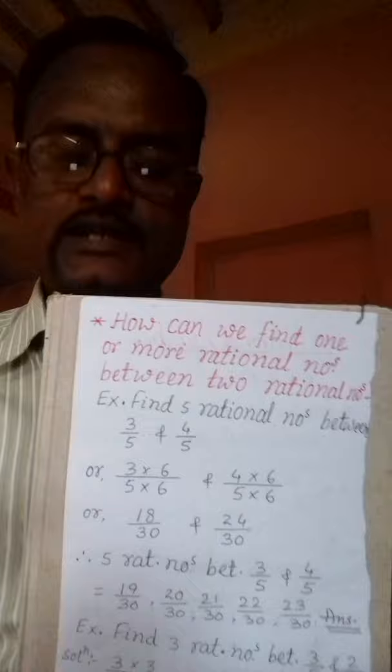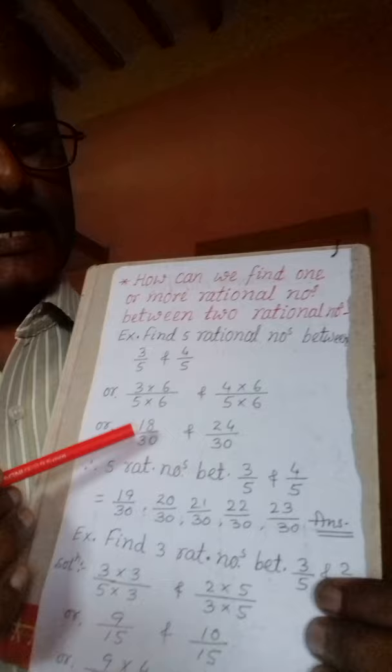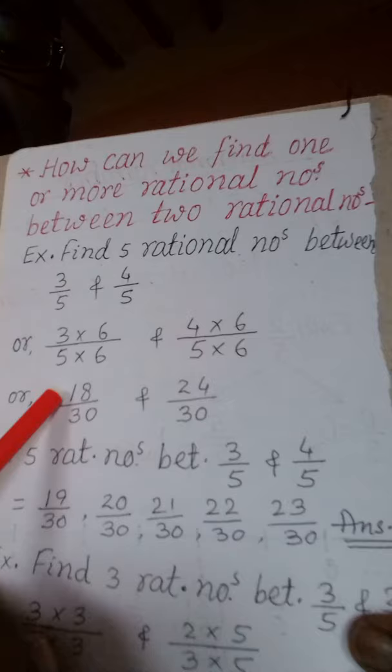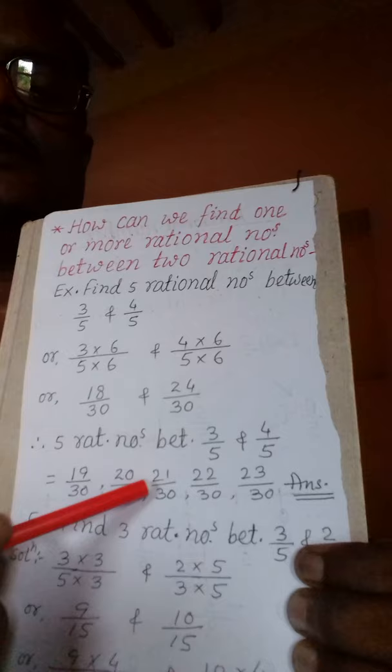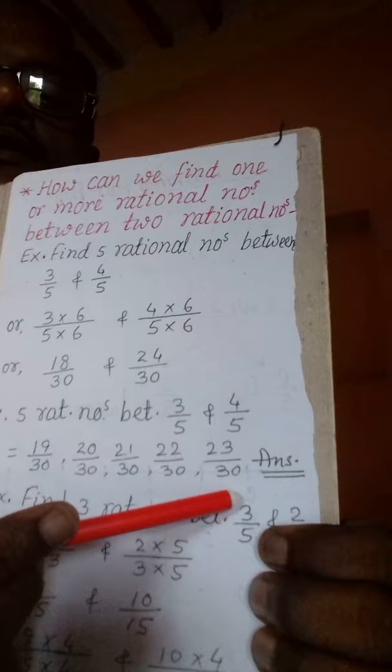तो हमारा number बन जाता है 18 by 30, और यह बन जाता है 24 by 30। 18 और 24 के बीच में हमें जितना number लाना था उतना आ गया — आप count कर सकते हैं — 19 by 30, 20 by 30, 21 by 30, 22 by 30, 23 by 30। हमारा इस तरह से answer हो गया।